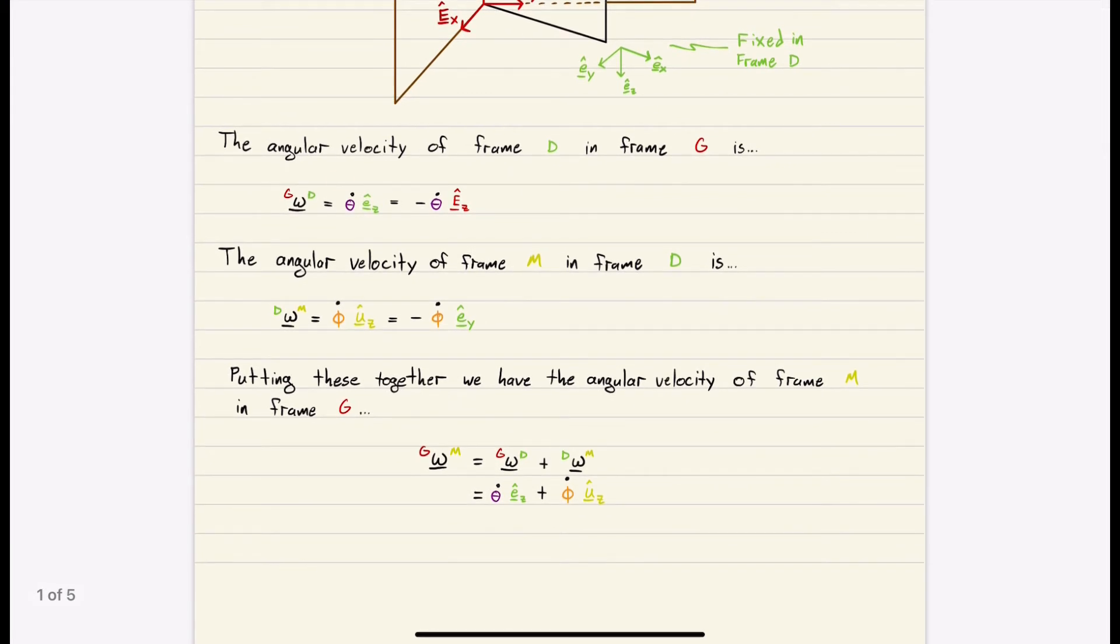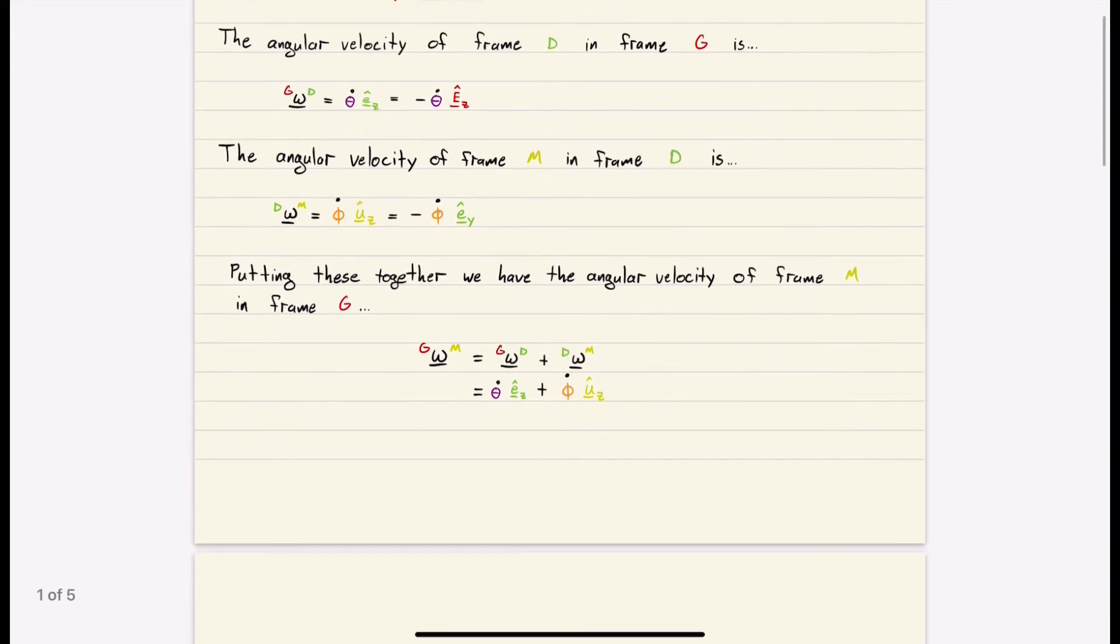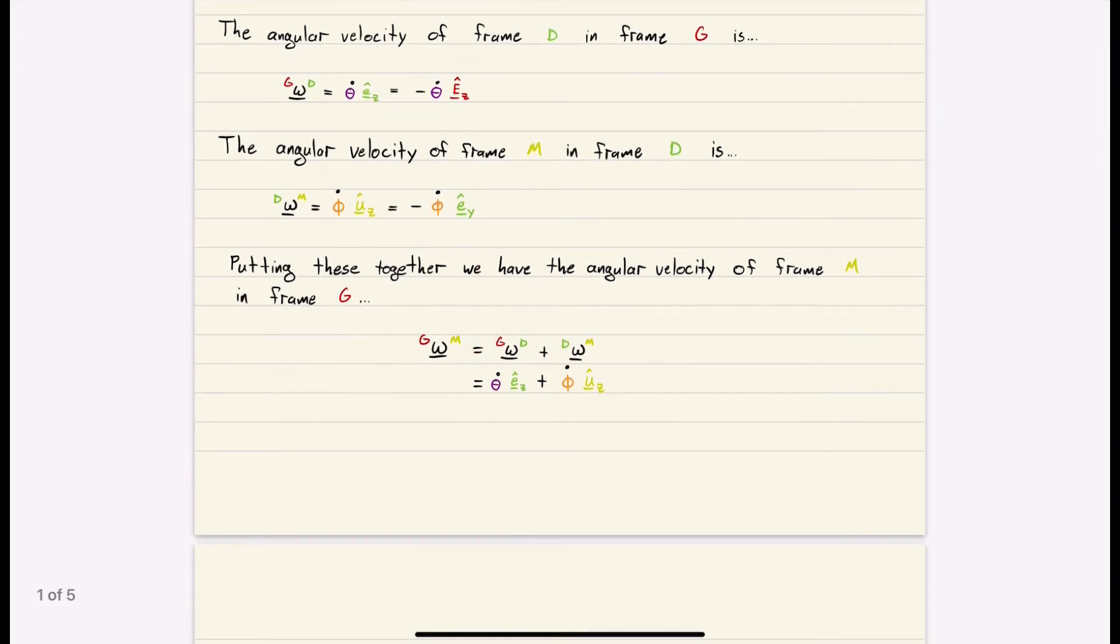So we just add them up. So we take, we're going to take this one here. This is D in G. And then we're going to add that to M in D. And there you go. This is our absolute angular velocity of frame M of our minute hand in our inertial frame ground.